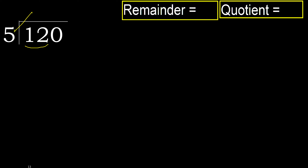5 multiplied by which number is nearest to 12 but not greater? 5 multiplied by 3 is 15, which is greater. 5 multiplied by 2 is 10, which is not greater. Subtract. Next.